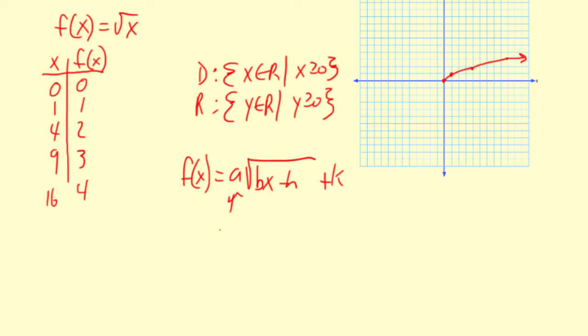And the a is the vertical stretch or shrink or reflection. The b is the horizontal stretch, shrink, or reflection. The h is the translation left to right, and the k is the translation up or down.